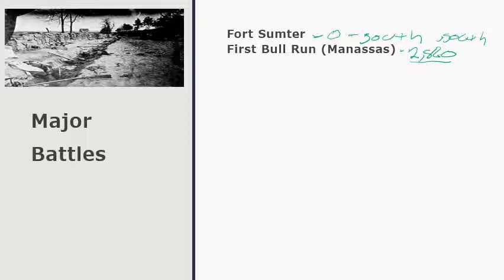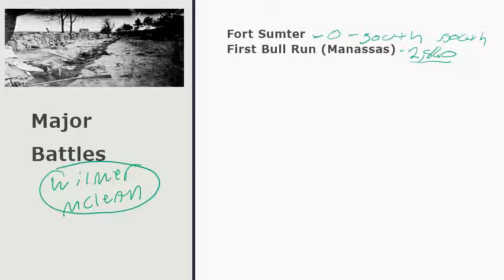After the battle, a man named Wilmer McLean, who owned a large house nearby, allowed the military to use it as a hospital for wounded soldiers. Afterward, he and his family moved as far away as possible — to a small town called Appomattox, further into Virginia. Ironically, four years later when the war ended, Robert E. Lee and Ulysses S. Grant went to the home of that same Wilmer McLean to sign the treaty ending the war. Wilmer McLean can genuinely say the Civil War began and ended at his house.